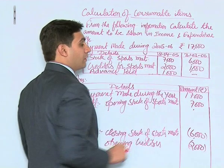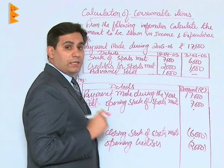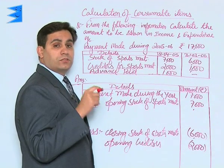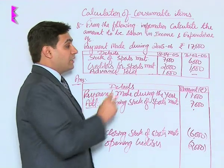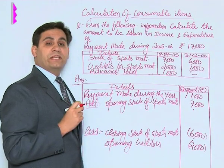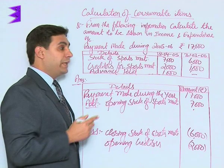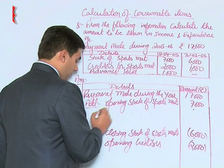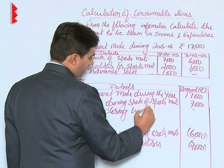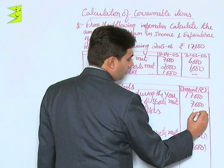Creditors at the end of this year, that is closing creditors, is given to be 1,000. These creditors actually pertain to the current year only. Since this amount is standing at the end of this year, by the matching principle the expense was incurred during this year but payment has not yet been made. So we add closing creditors: 1,000.